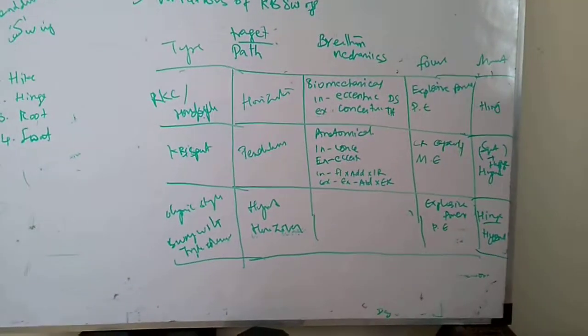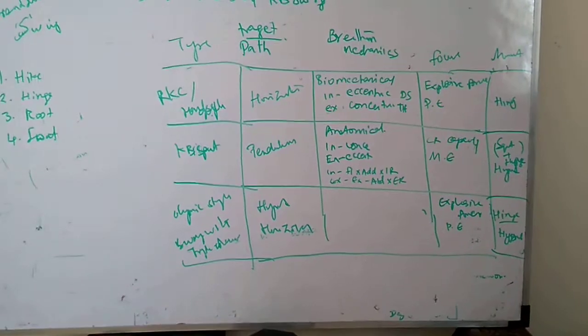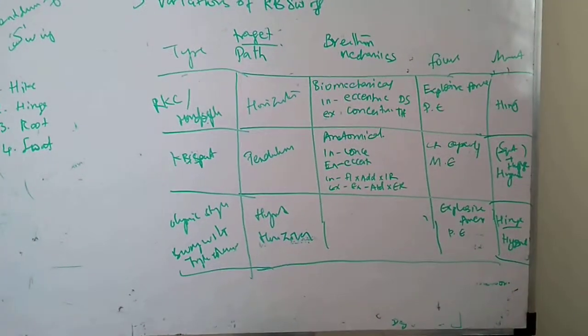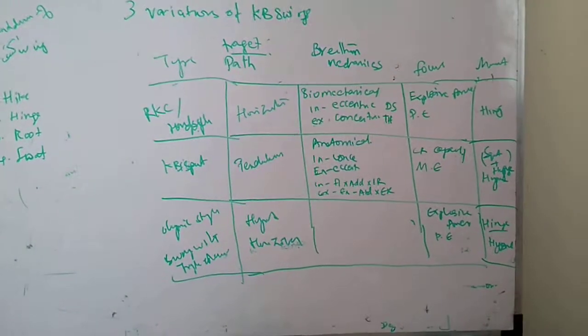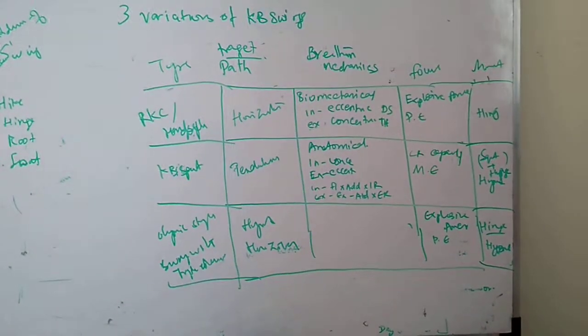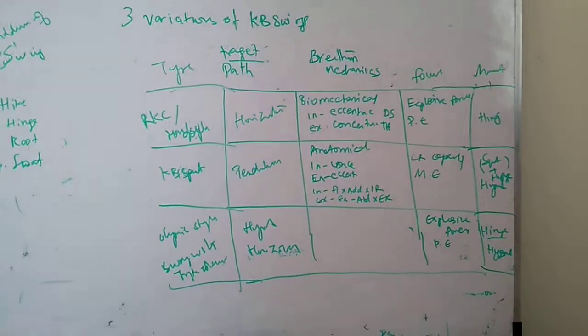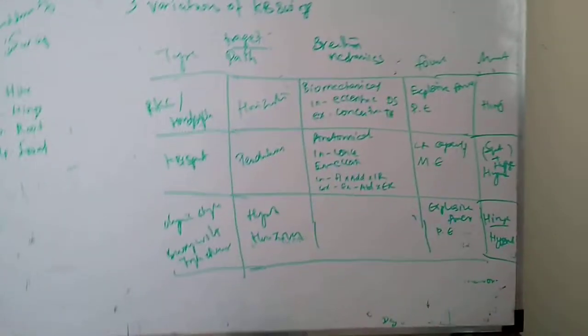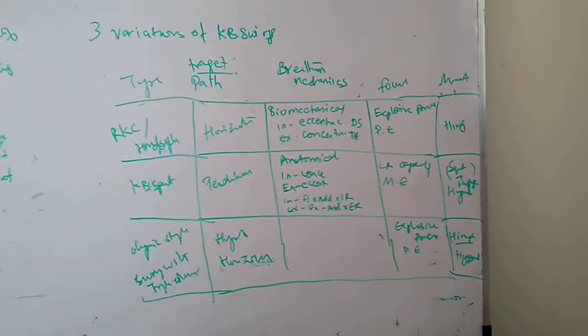So the first one is RKC or RCL swing. The trajectory or bell path is horizontal. The breathing mechanics are biomechanical, that is inhale during the eccentric and exhale during the concentric. Finally, the focus here is explosive power,